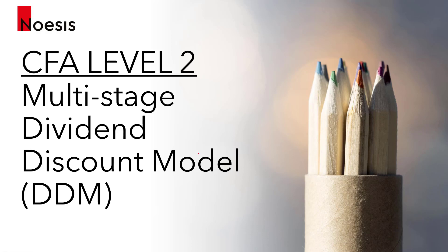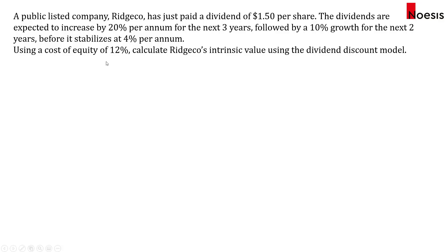In this video we'll look at the valuation of a company using the multi-stage dividend discount model or DDM. In this example we have a publicly listed company, Richco, that has just paid a dividend of $1.50 per share, denoted as D0. The dividends are expected to increase by 20% per annum for the next three years (D1 to D3), followed by 10% growth for the next two years (D4 to D5), and thereafter stabilize at 4% per annum into perpetuity. Using a cost of equity of 12%, we'll calculate Richco's intrinsic value using the dividend discount model.